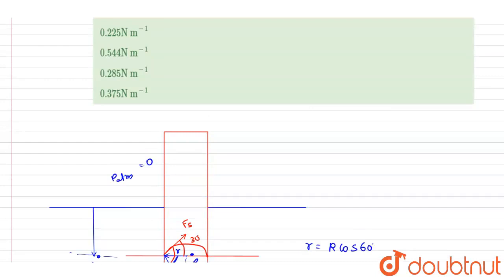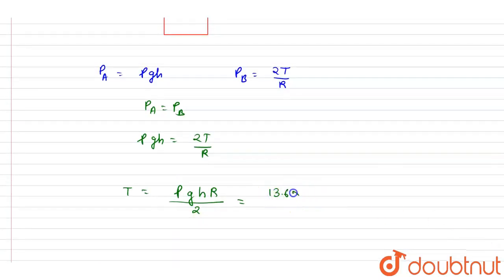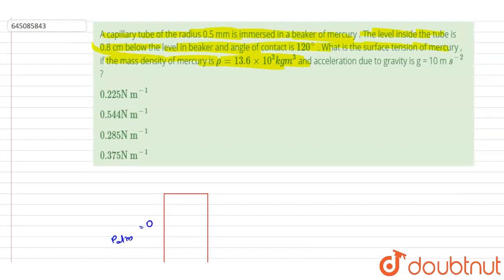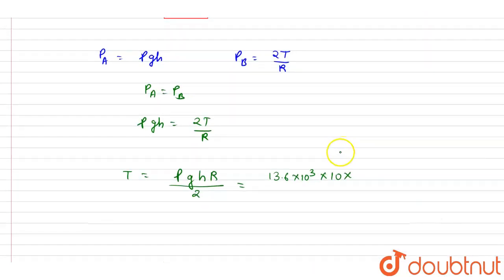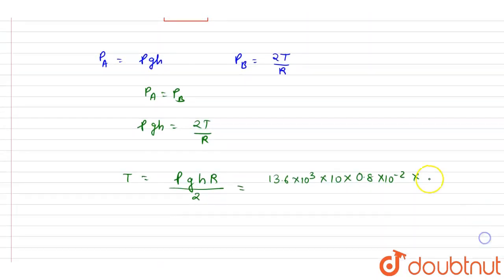Rho is given here, it is 13.6 into 10 to the power 3, g is 10, height the mercury level is how much below, it is also given in the question, it is 0.8 centimeter below. Now the radius, it was 1 mm so I will write it as 10 to the power minus 3 and you can divide it by 2. If I divide it by 2, then this will be the expression. So now I can solve it, I will write down 13.6 into 0.8 in division 2, it will be